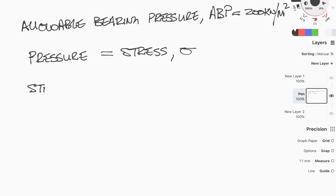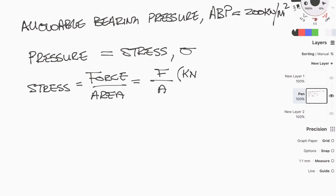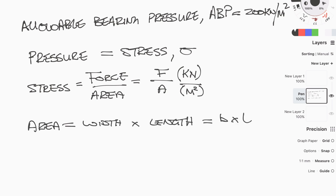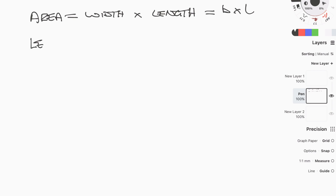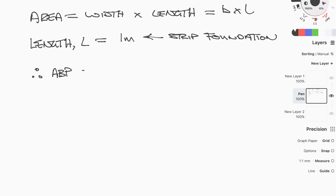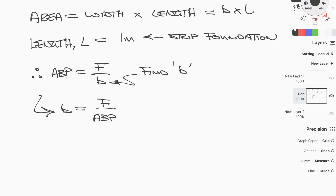Stress is measured in kilonewtons per meter squared — a kilonewton is a force and meter squared is area, so stress is simply force divided by area. For a strip foundation, the force is a line load given in kilonewtons per meter. We can rearrange the stress equation so the unknown is width: since the strip foundation is considered per meter length, the area is simply width times one meter, so we divide the line load by the allowable bearing pressure to get the required width.